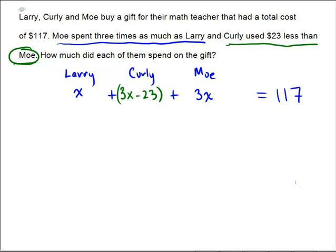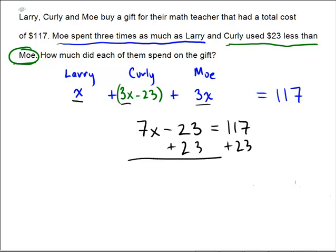So Curly must be 3x minus 23. The amounts spent are: Larry = x, Curly = 3x minus 23, and Moe = 3x, and all together it equals 117. Now we're in the algebra. x plus 3x plus 3x is a total of 7x, minus 23, equals 117. Add 23 to both sides: 7x equals 140. Divide by 7, and x equals 20.